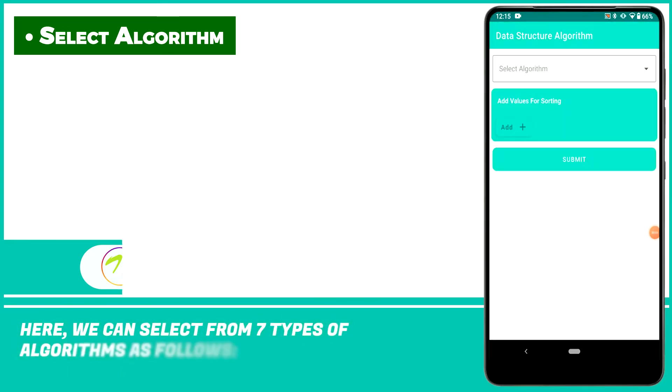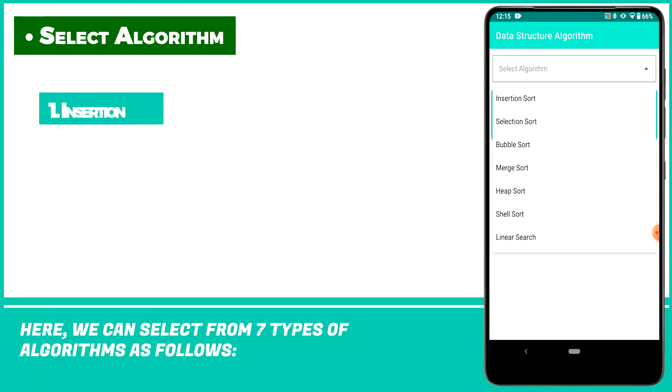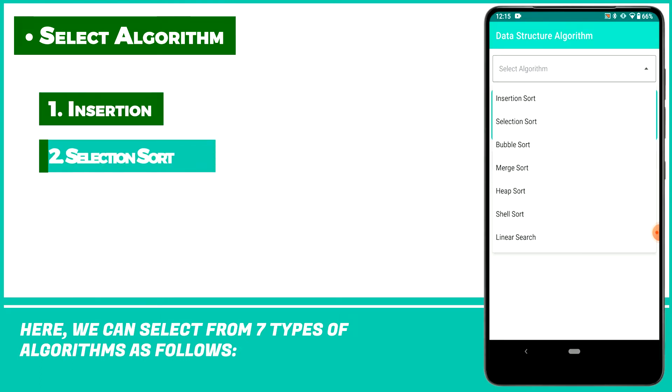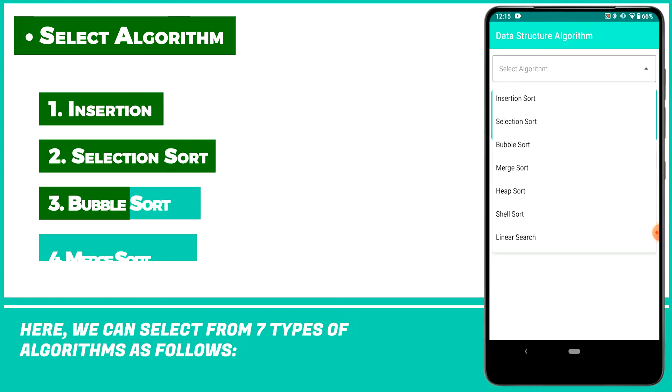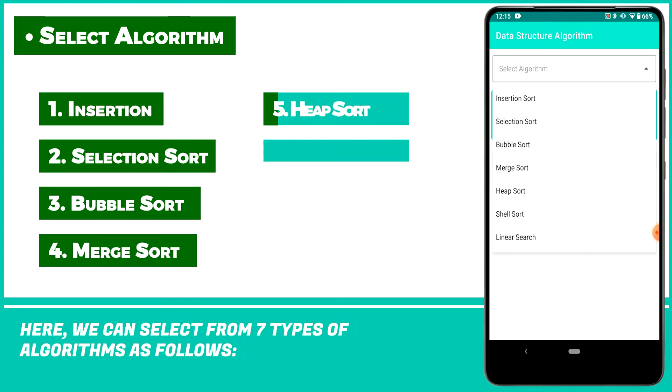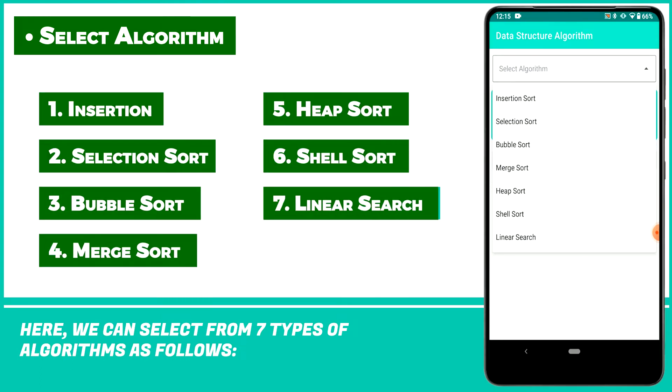Here we can select from seven types of algorithms for sorting, such as insertion, selection, bubble, merge, heap, shell, and linear search.